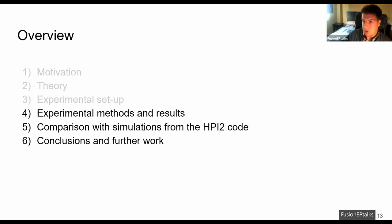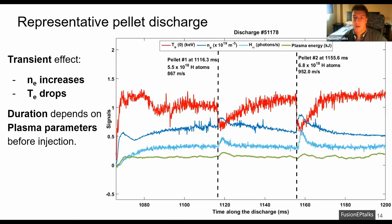I will continue with the experimental results and I will begin with the effect that a pellet has on the plasma with a representative discharge. Here we can clearly see that when pellets are injected there is a significant drop in the electron temperature here in red and an increase in the electron density and this is a transient effect whose duration depends on the plasma parameters before injection.